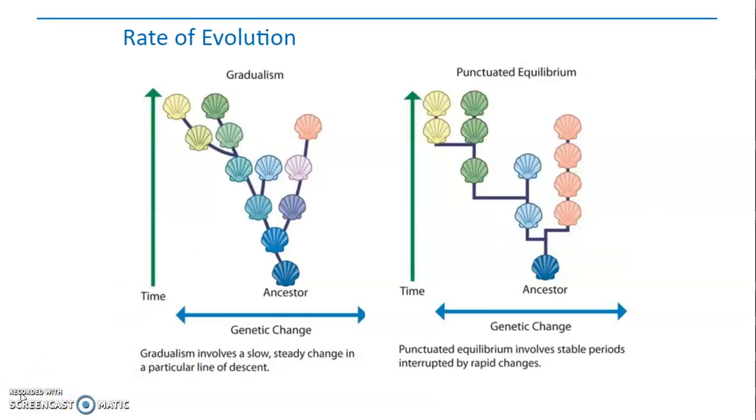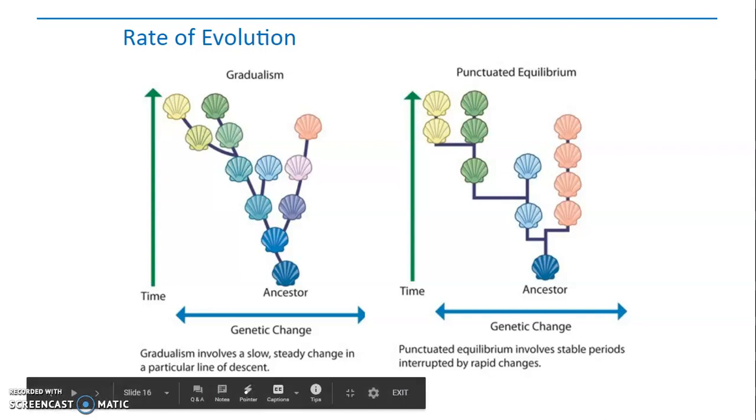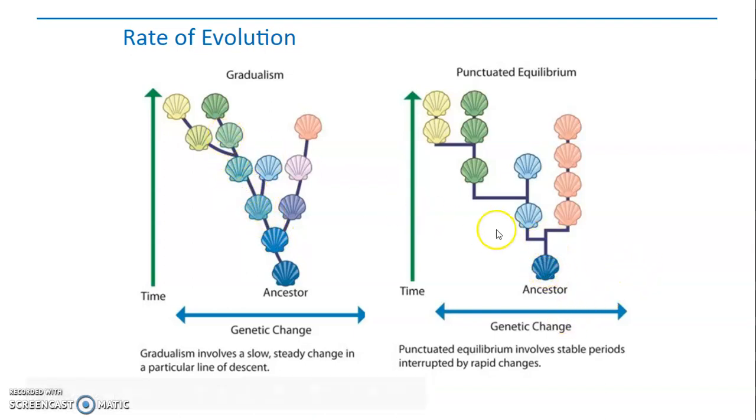Alright, so now you can see gradualism - we're changing colors here very slowly, steadily over time. Whereas with punctuated equilibrium, we're seeing massive changes. We're going from light blue branching into, or from dark blue into light blue and into pink, and then we see we go from the light blue to green and then the green to the yellow.